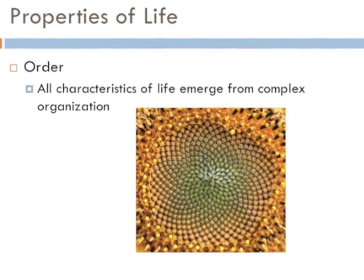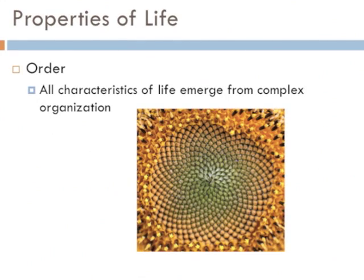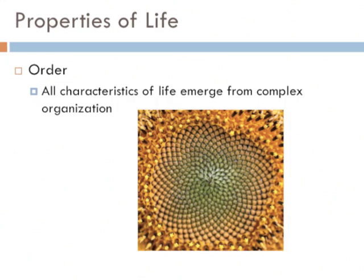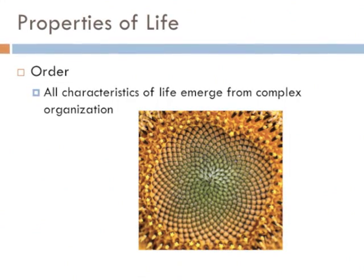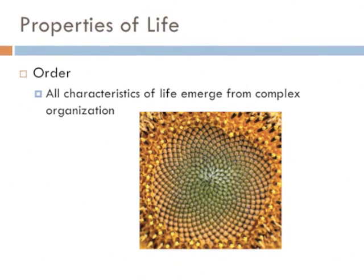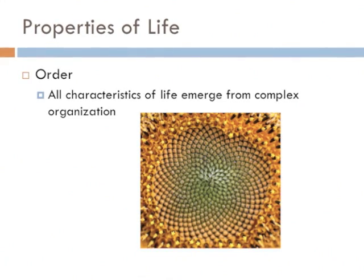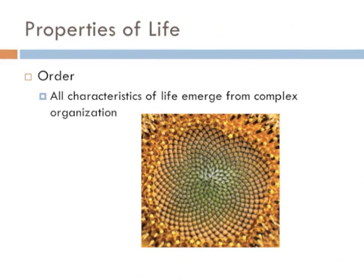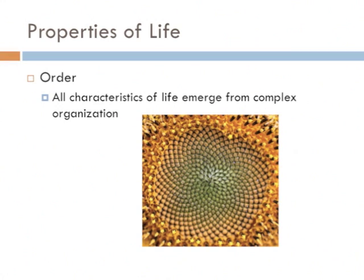So what does it mean to be alive? We're going to talk about six characteristics of life that all have to be present in order for something to be considered alive. First, life must have order. All of life emerged from complex organization of interacting molecules. So everything that exists to life is actually very ordered, yet very complex. And we'll go over what that means in the next few slides.